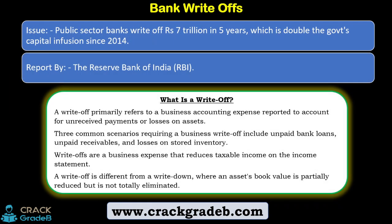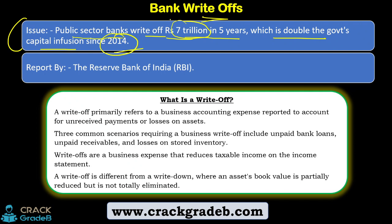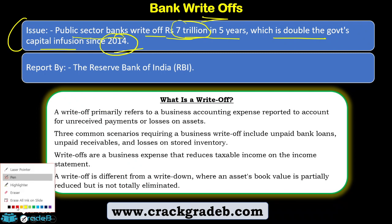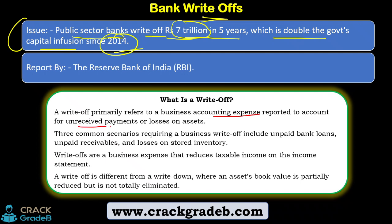Let's move forward to bank write-off. This is another news article. The issue is: public sector banks wrote off Rs 7 trillion in 5 years, which is double the government capital infusion since 2020. This is a very grave concern because whatever amount the government infused into public sector banks to restructure them or give them financial strength, the banks have written off double that amount, equivalent to around Rs 7 trillion.